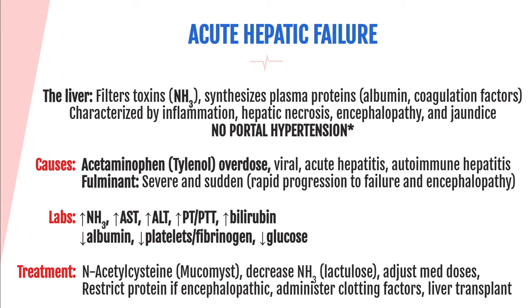In severe hepatitis, there is a rapid progression over hours or days to severe destruction of hepatocytes and severe encephalopathy. In reviewing labs for hepatic failure, the ammonia level will be elevated, telling you how well the liver is filtering. Liver enzymes AST and ALT will be elevated, and PT/INR and PTT will be elevated because the liver makes coagulation factors — when not working properly, it can't make prothrombin, fibrinogen, and other clotting factors.